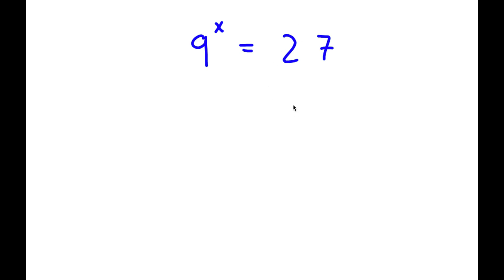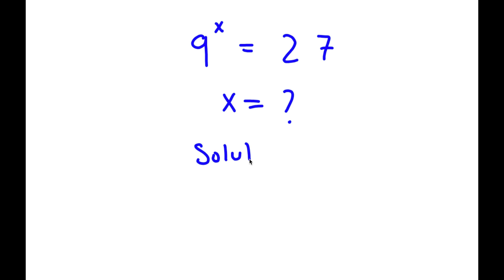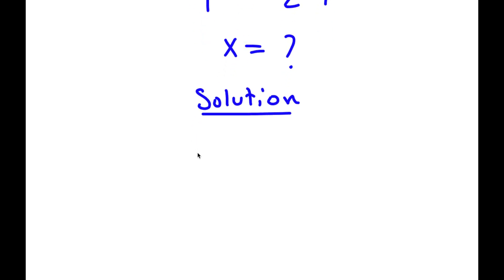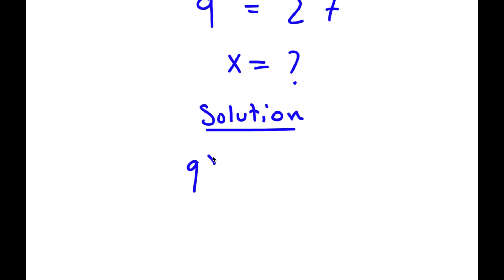In this problem, I have 9 to the power of x is equal to 27. I want to find the value of x. So for my solution, I'll first start with 9 to the power of x is equal to 27.